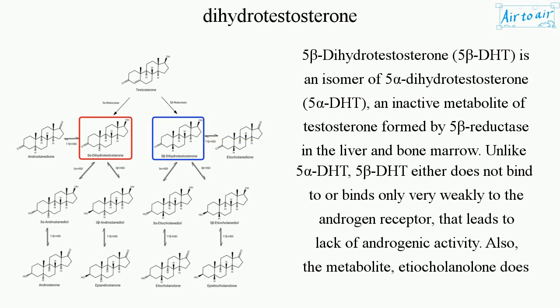5-beta-dihydrotestosterone (5-beta-DHT) is an isomer of 5-alpha-dihydrotestosterone (5-alpha-DHT) and an inactive metabolite of testosterone formed by 5-beta-reductase in the liver and bone marrow. Unlike 5-alpha-DHT, 5-beta-DHT either does not bind to or binds only very weakly to the androgen receptor, leading to a lack of androgenic activity.